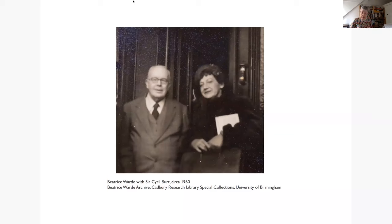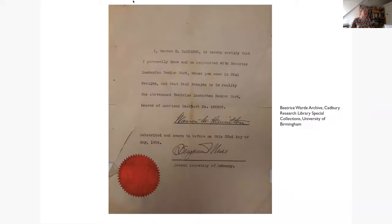I have a rather beautiful certificate from the Cadbury Research Library — from the American Embassy in 1926 — which is vouching for the identity of Beatrice Ward, stating that Beatrice Lamberton Becker Ward uses the pen name of Paul Beaujean. I speculate it might have been used for opening bank accounts, or perhaps to facilitate access to archives and other areas that were male-dominated environments where she needed to prove her credentials.